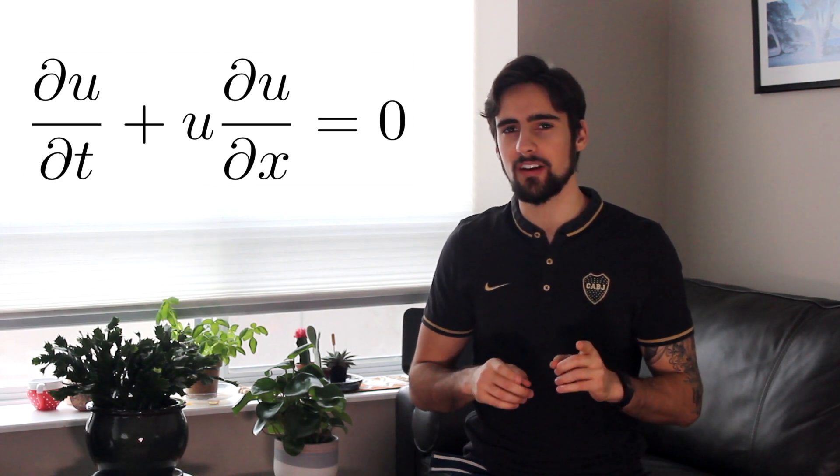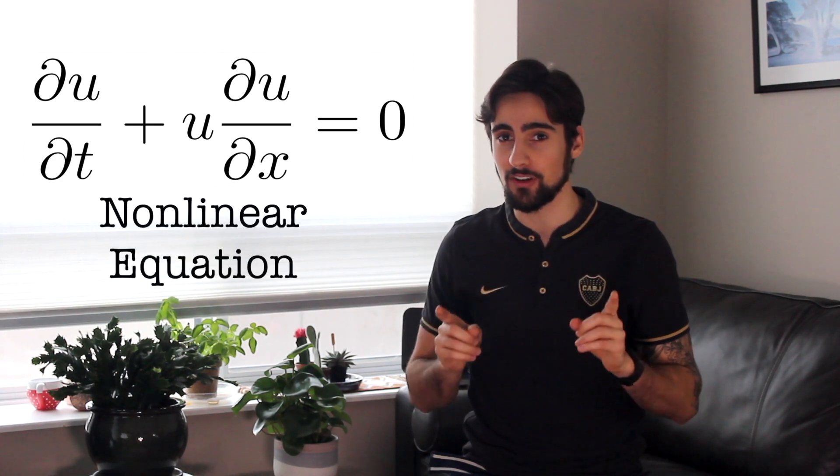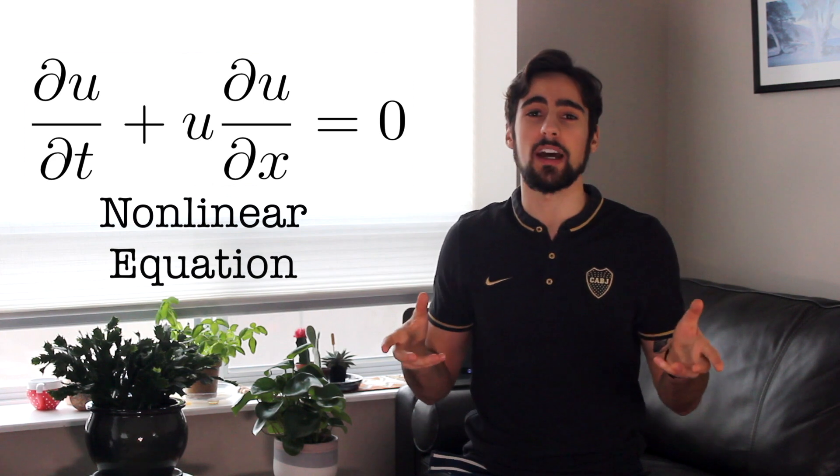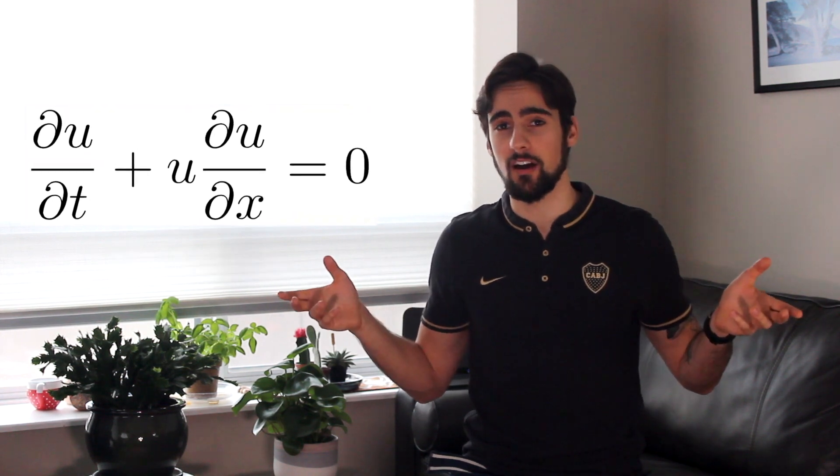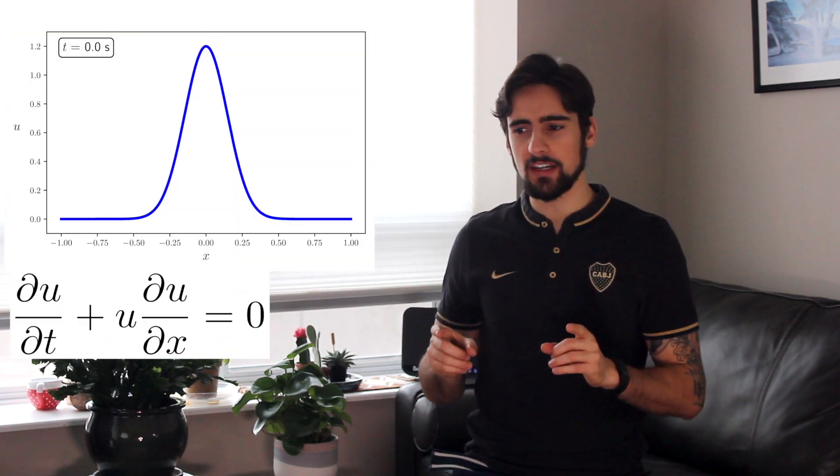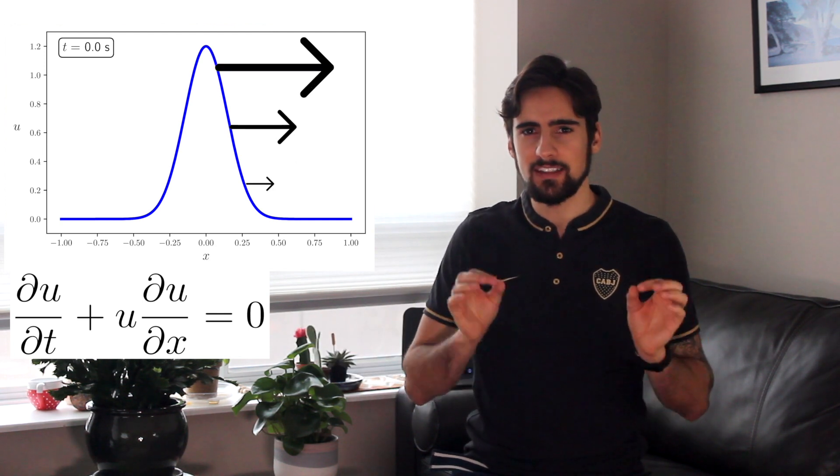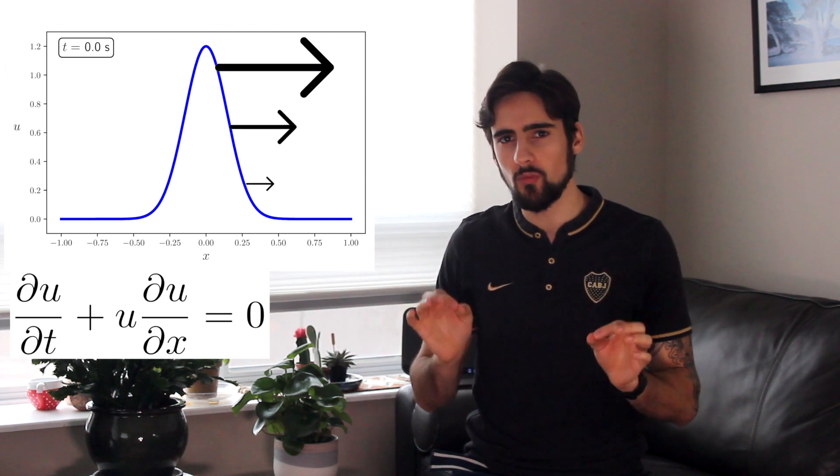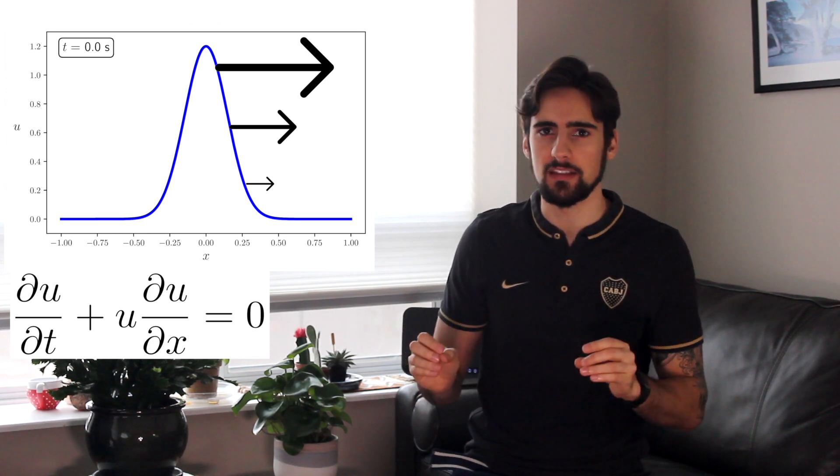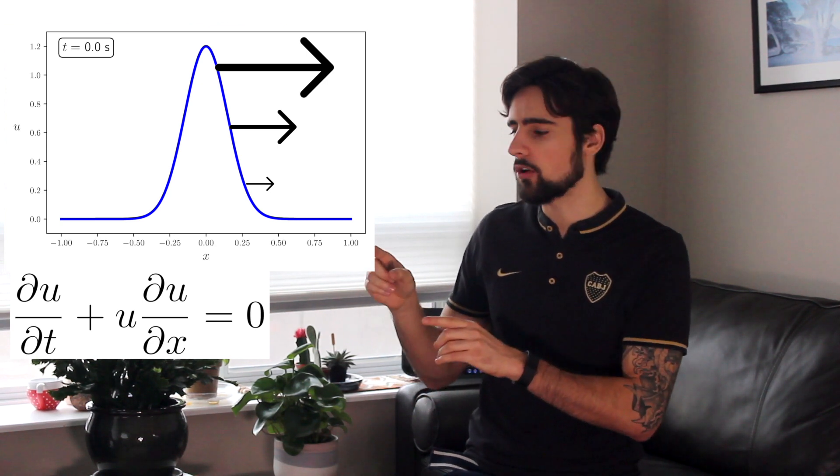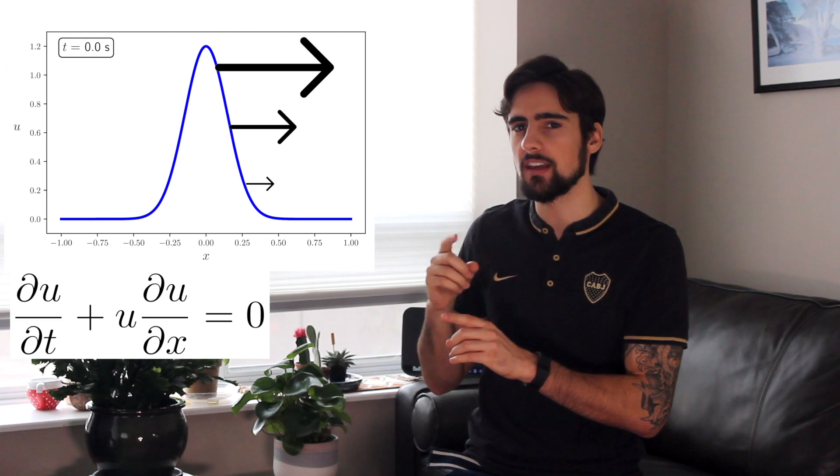This equation is called Burger's equation. And the reason it's weird is because it's now a non-linear equation. In fact, it's a prototype for what non-linear equations usually are. It's not linear because instead of the whole wave moving with a constant speed a, different parts of the same wave move with different speeds. The wave actually moves according to whatever the height of the wave is at that point.